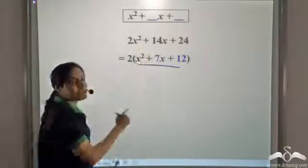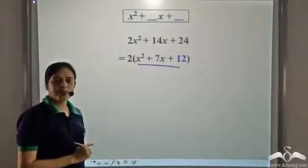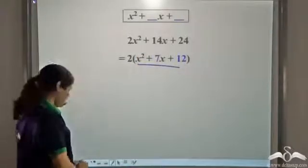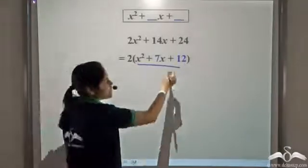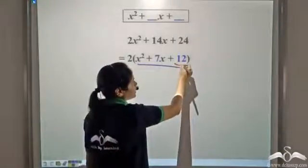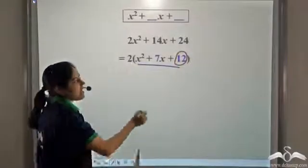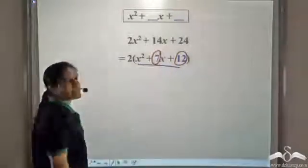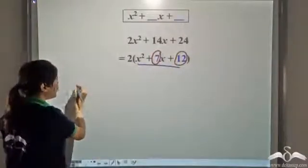What was that method? We need to find two numbers such that their product is equal to 12 and their sum is equal to 7. So let us do that.